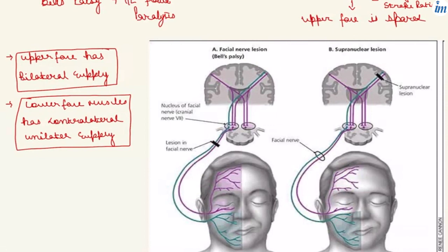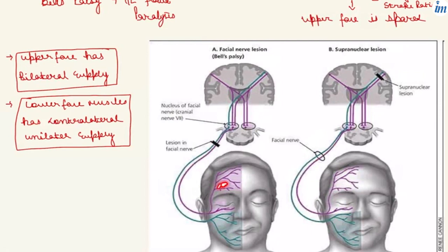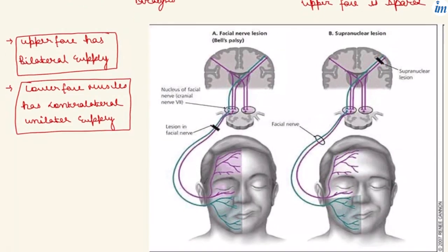The upper face muscles have bilateral supply — from both the left and right sides of the brain. But the lower face muscles, for example orbicularis oris, have only contralateral supply — from the opposite side of the brain. You can see this in the diagram: the upper motor neurons in pink are supplying both sides for the upper face muscles, but for the lower face muscles the supply is only from the contralateral side.